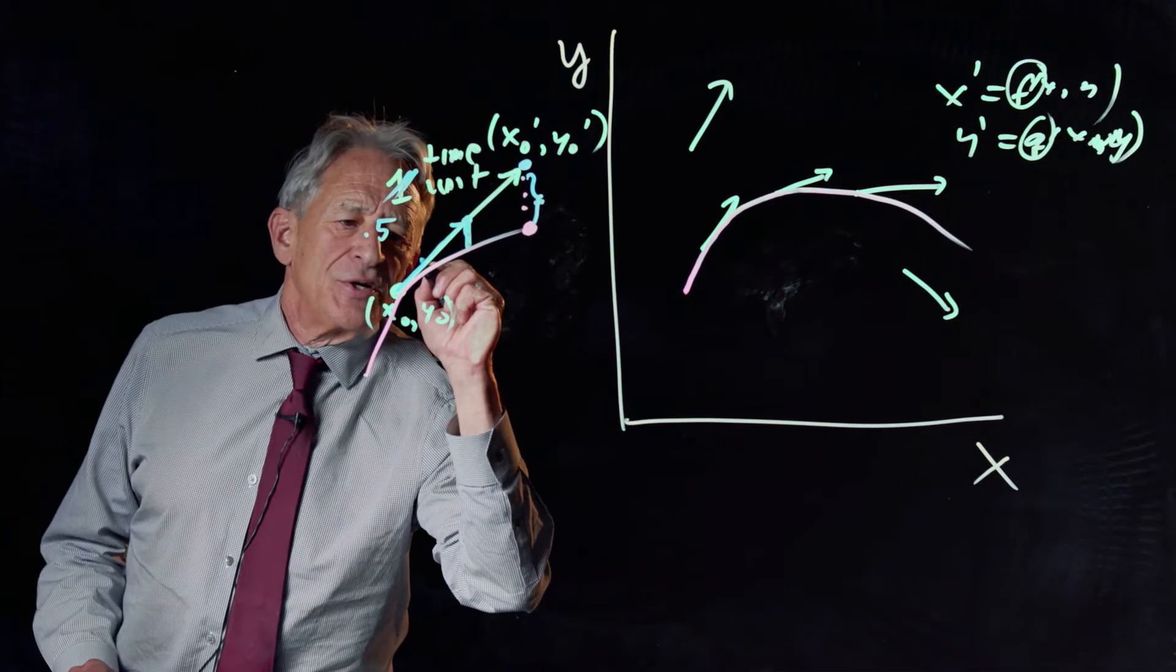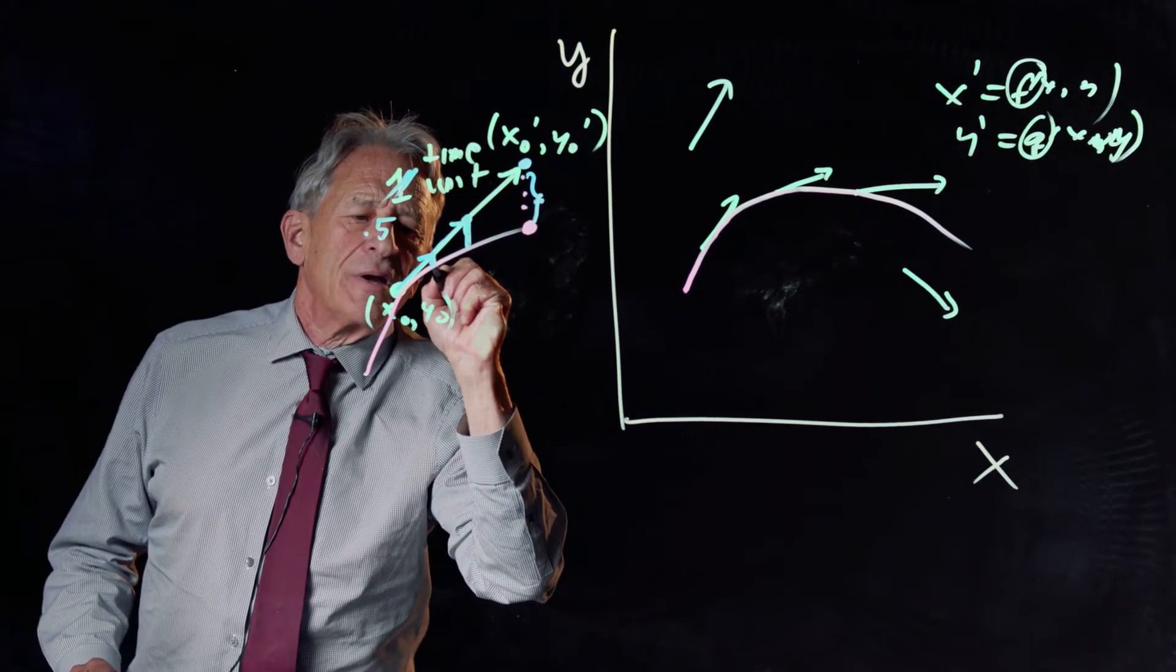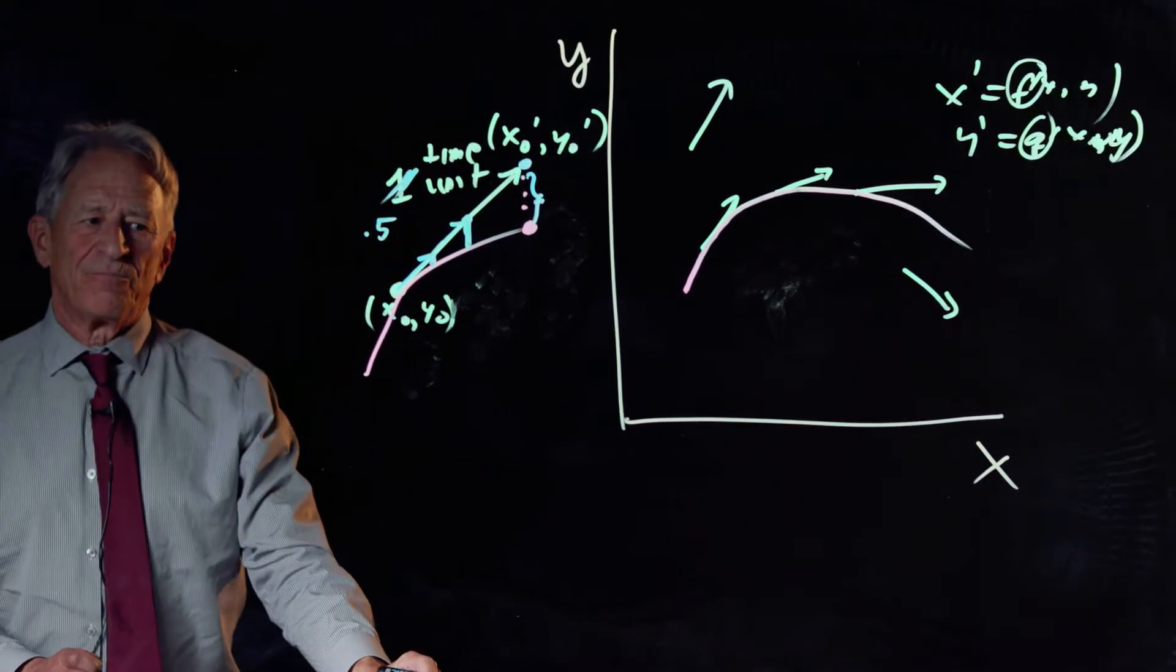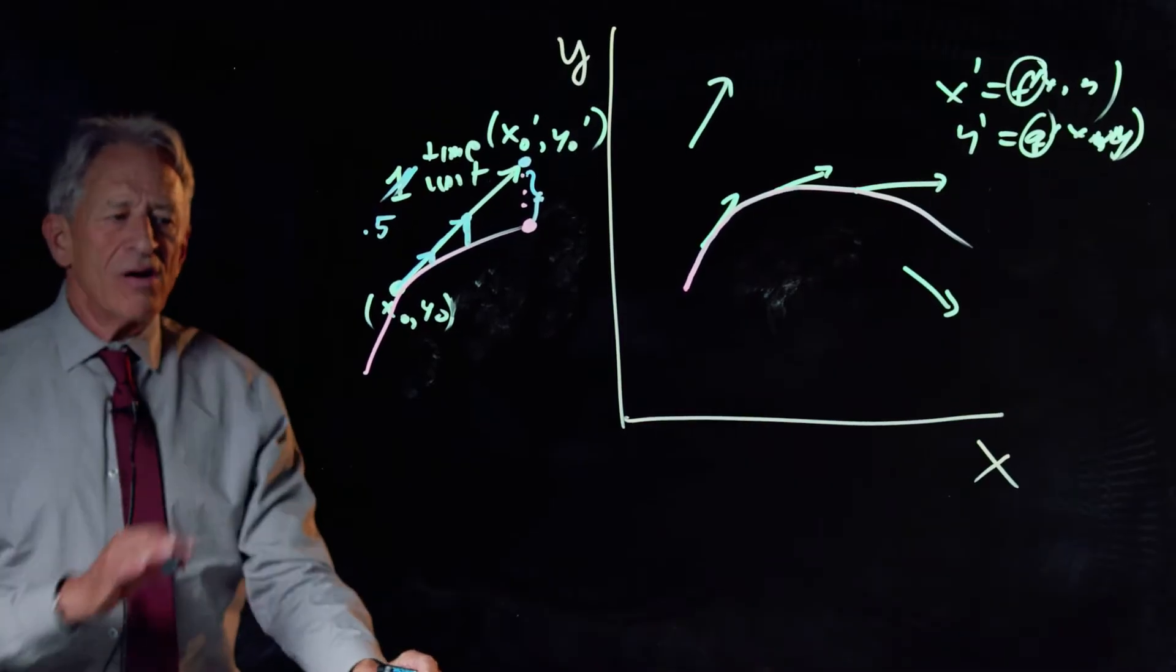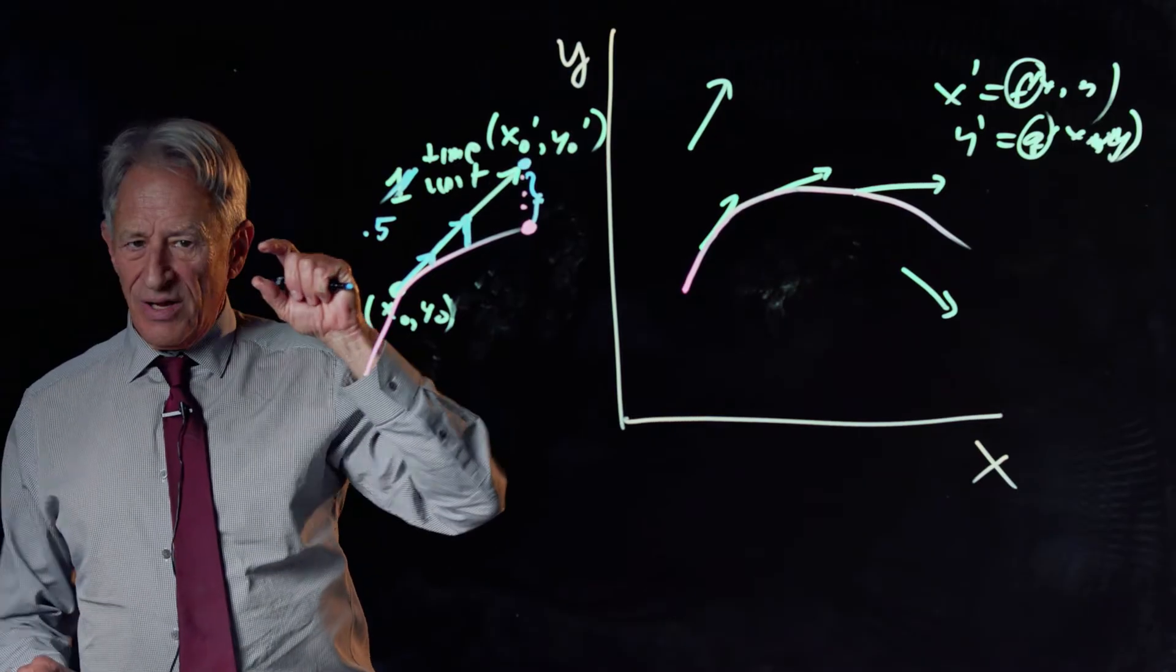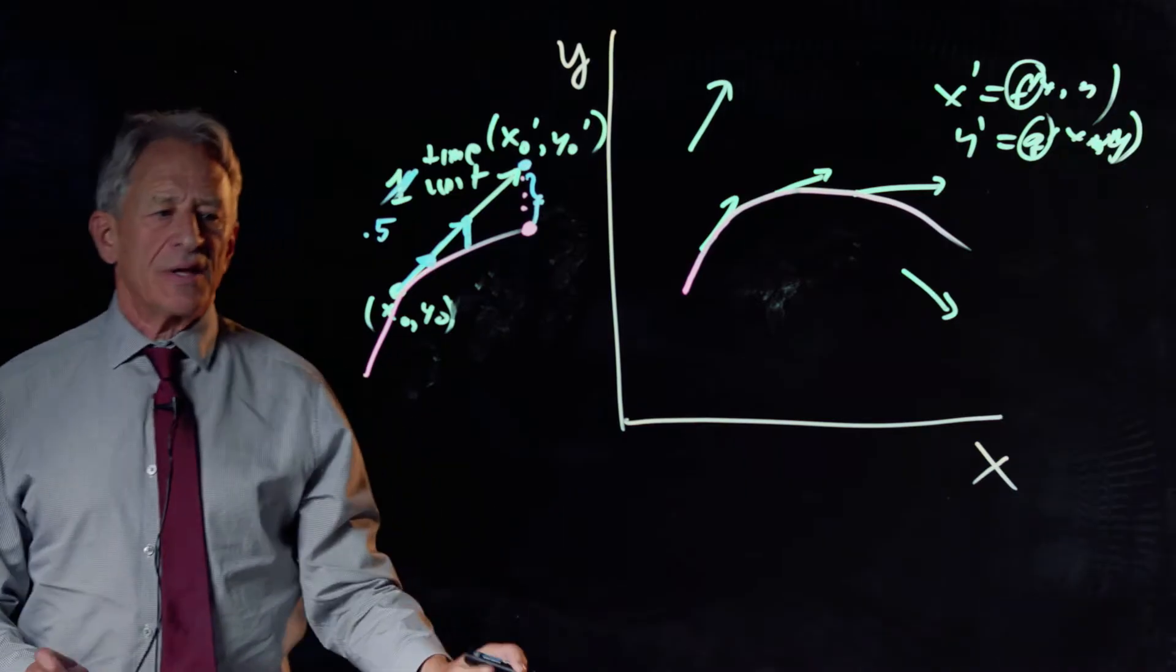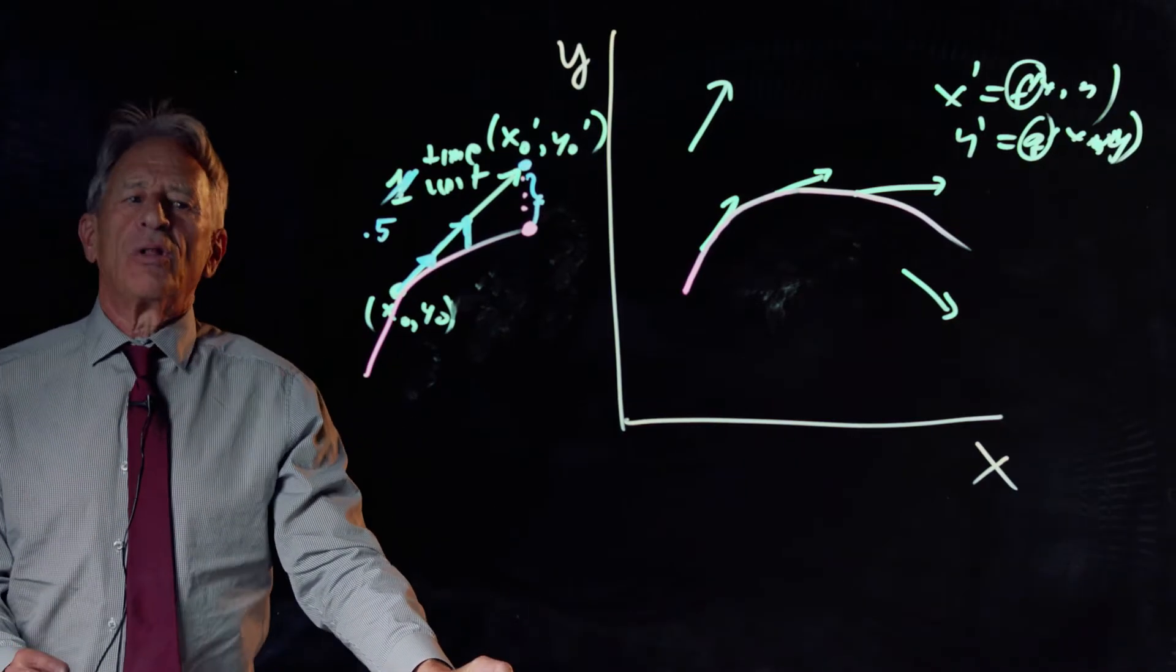If I take a still shorter lurch, why look, my error is even less. And so the error gets less and less. It gets smaller and smaller as the size of your lurch gets smaller and smaller.